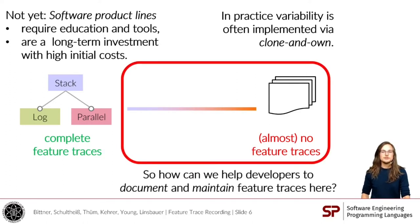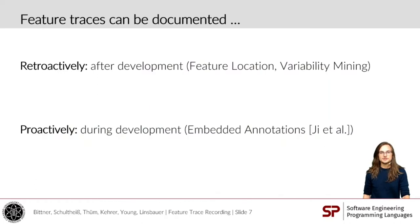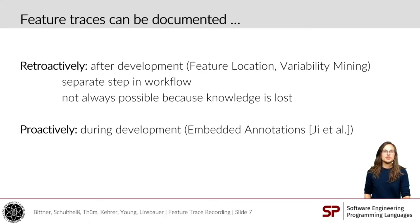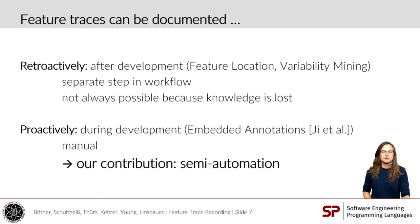So our main question is: how can we help developers to document and maintain Feature Traces within this spectrum between software product lines and Clone and Own development? Usually, there are two ways to document Feature Traces. The first one is to document them retroactively — after development, in a separate working step. This is not always possible, because this knowledge might be lost when some time has passed, and when adopting Feature Traceability to an existing project, there might be no Feature Traces at all and everything has to be documented at once. The other way is the proactive approach, where developers already document Feature Traces during their development, but this has to be done manually every time. And this is our contribution with Feature Trace Recording, where we want to automate this approach.